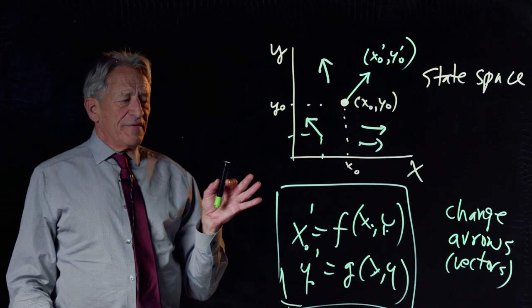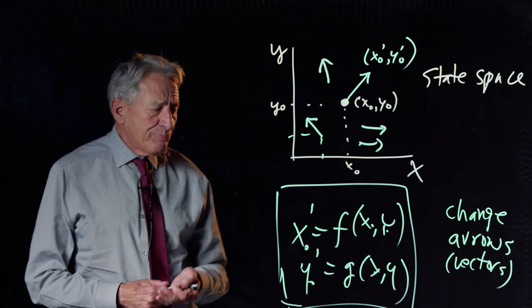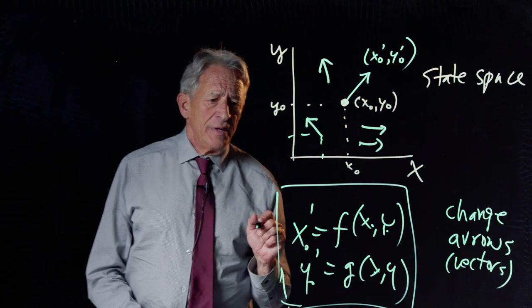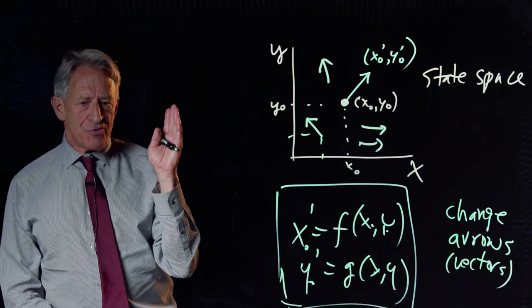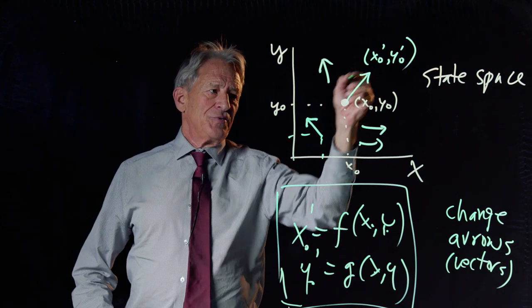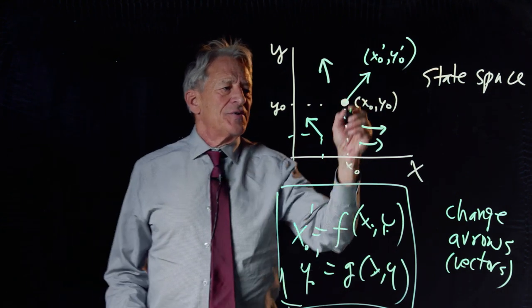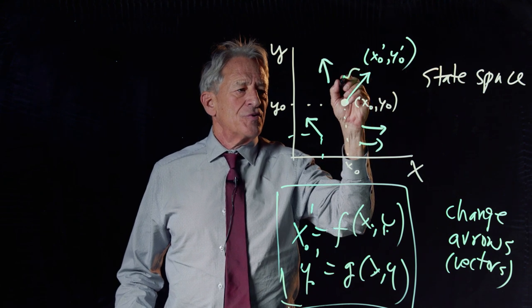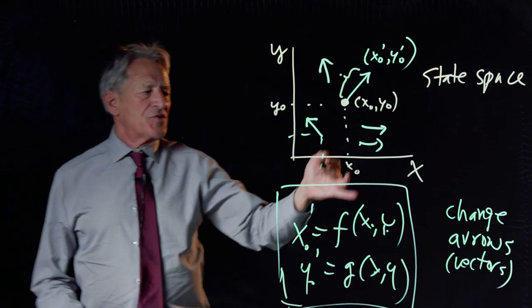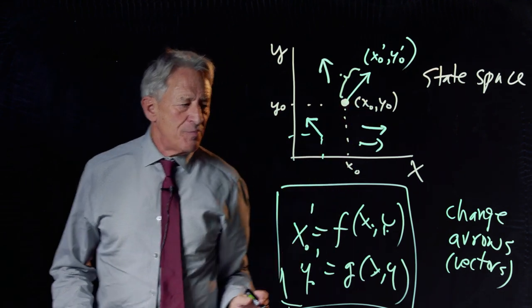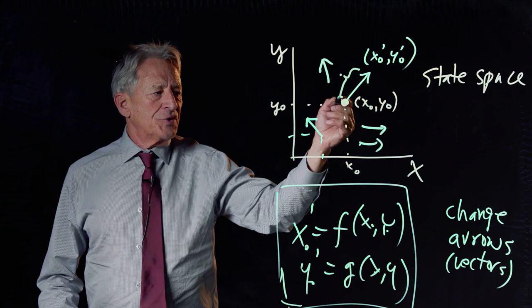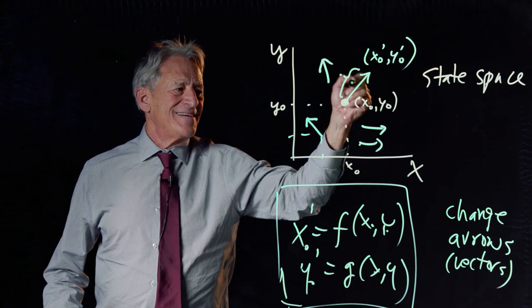So we can think of it this way. The change vector at the point is an instruction. It's an instruction to move in a certain direction, in this case northeast. And it's an instruction to move at a certain rate, which is given by the length of that change vector. So this change vector at this point says, as it were, if you are at this point, move northeast at this speed.